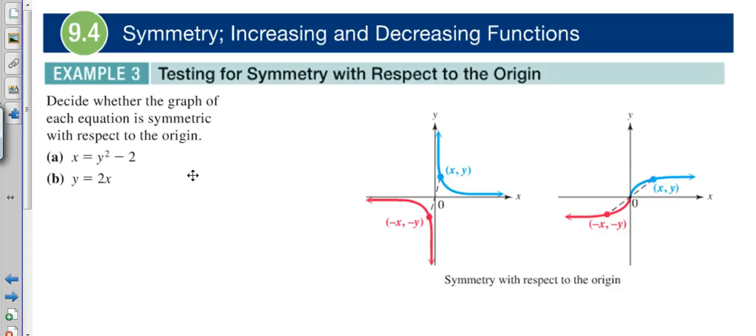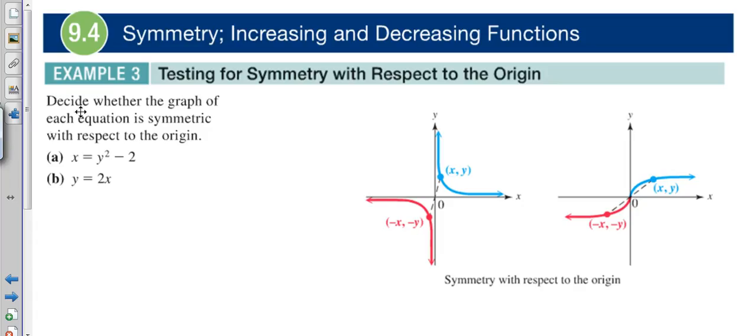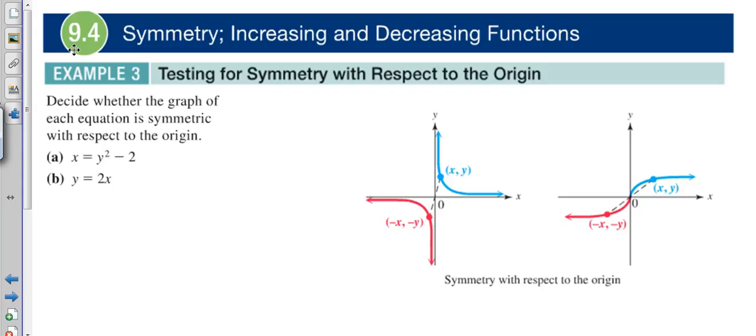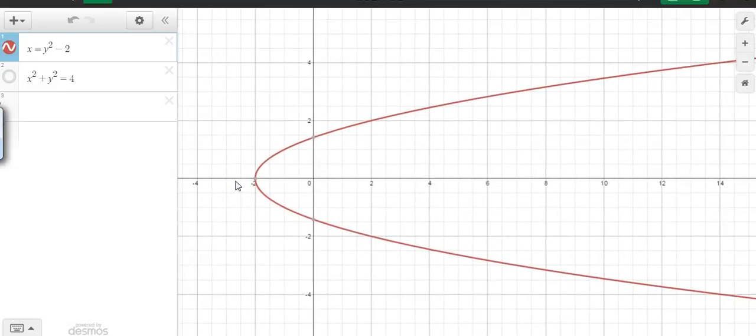We can do this both algebraically and graphically. Graphically, we can just test and see what it looks like. Let's go ahead and graph x = y² - 2. By looking at this right now, this doesn't even look like it has origin symmetry.